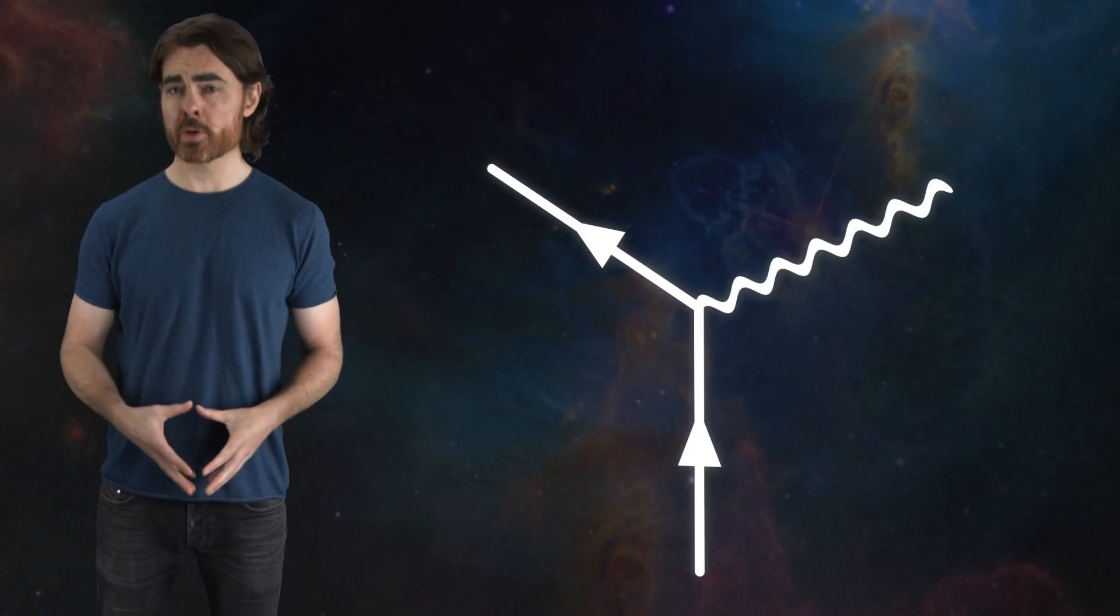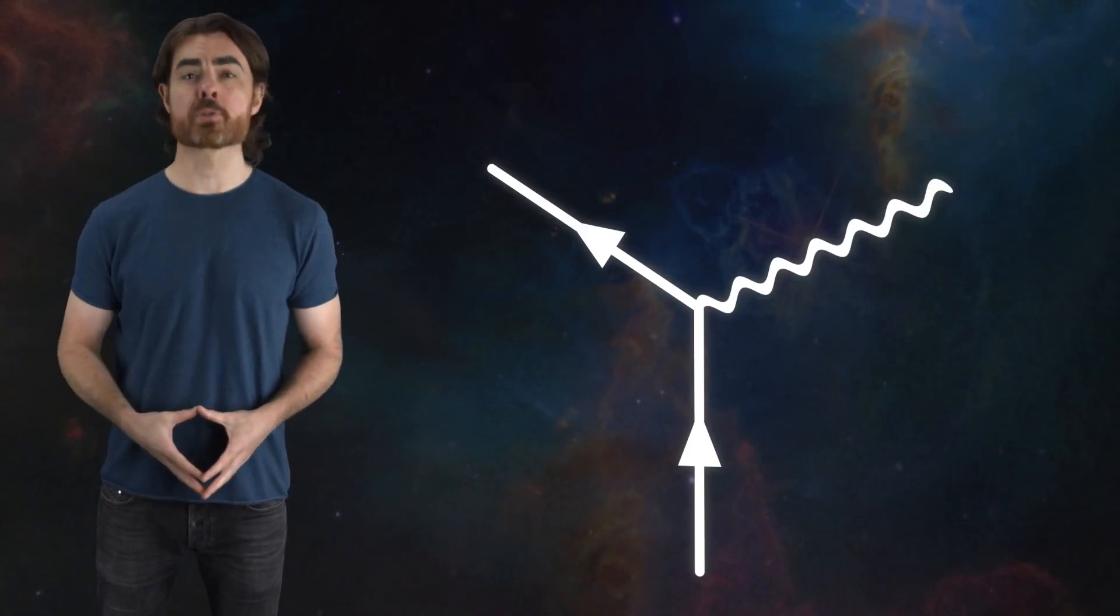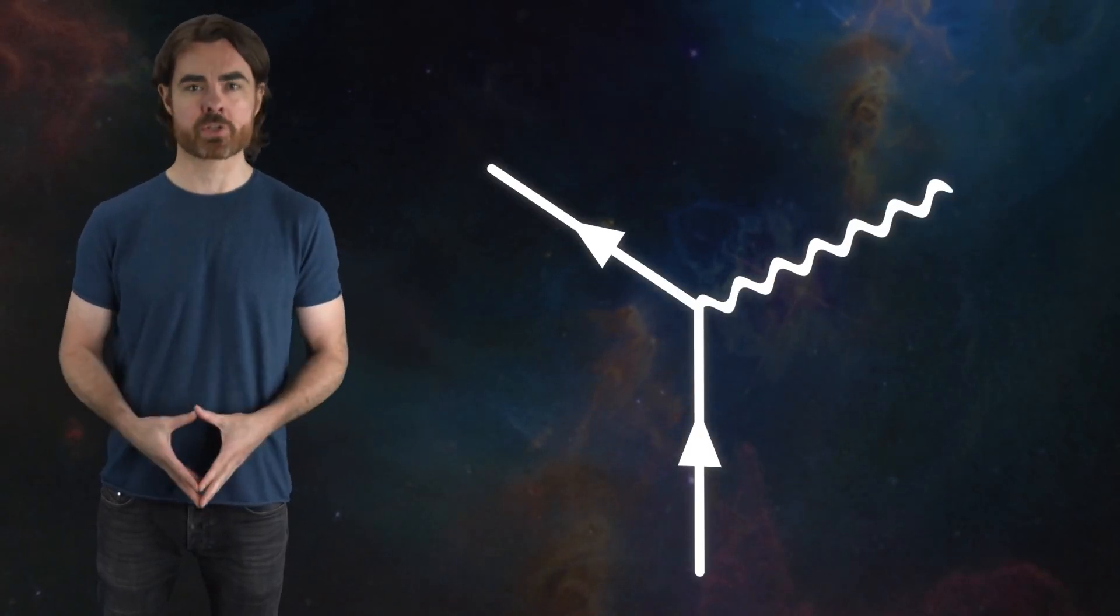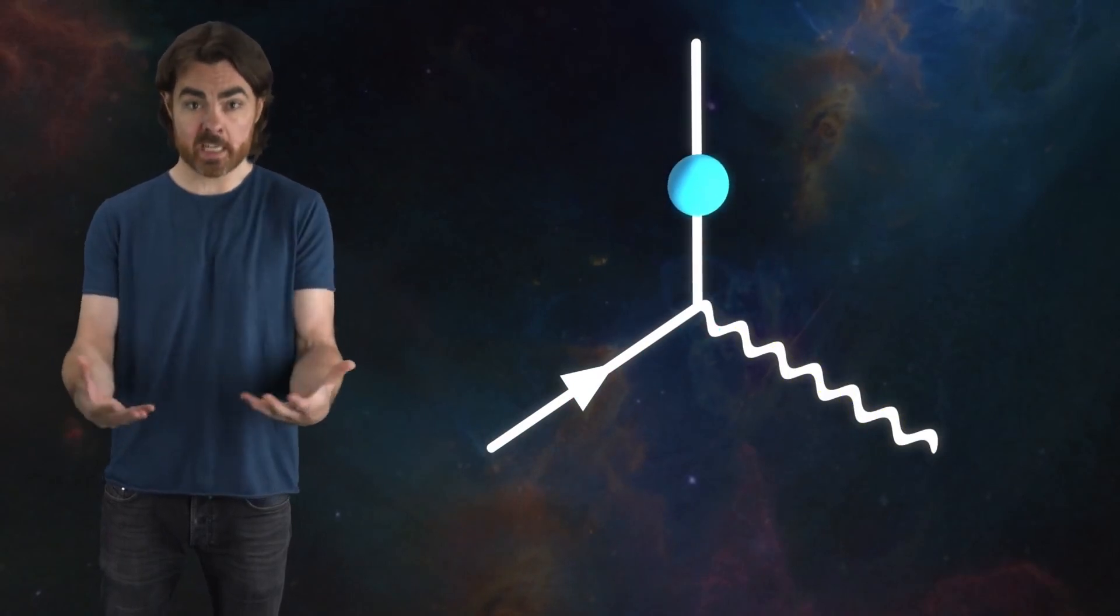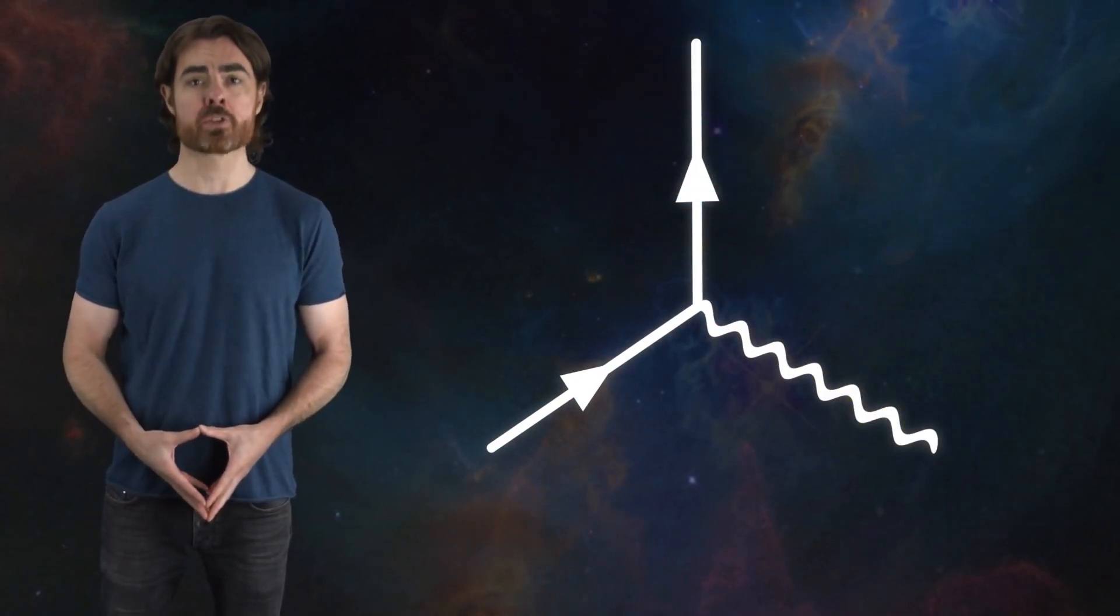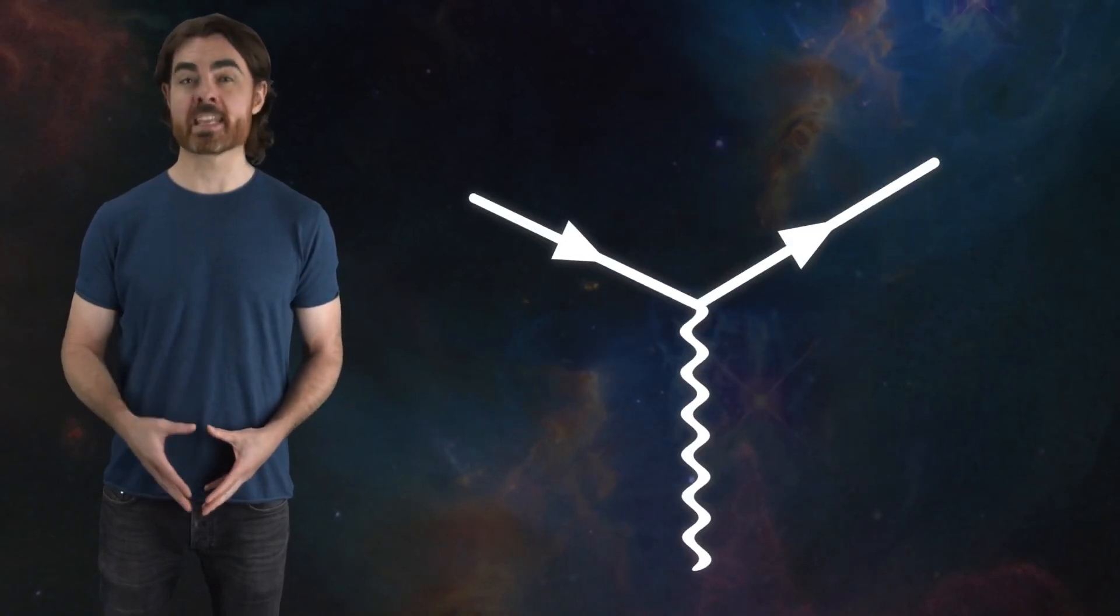Oriented like this, with time increasing upwards, this vertex represents an initial electron that emits a photon, after which both particles move off in opposite directions. But if we rotate this vertex so that photon is coming in from below, we have a picture in which an electron absorbs that incoming photon. The photon vanishes as its momentum is completely transferred to the electron.